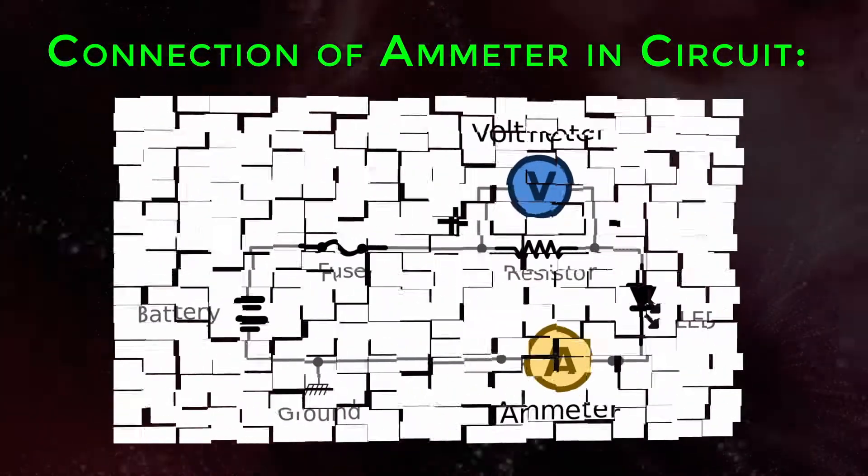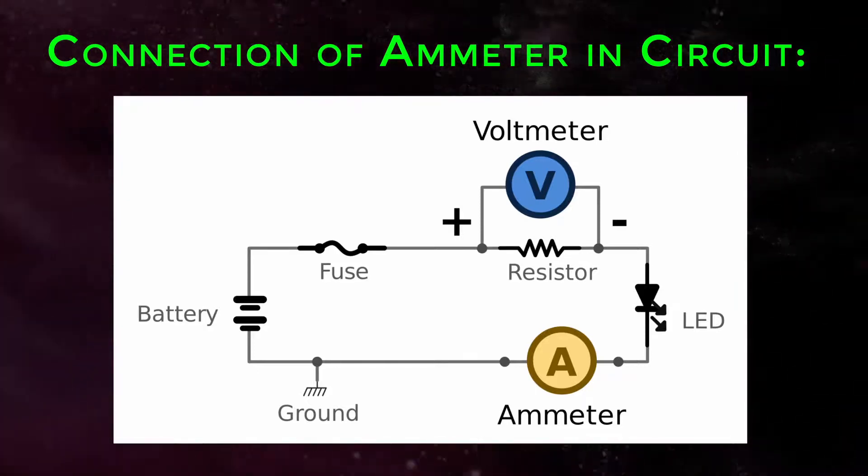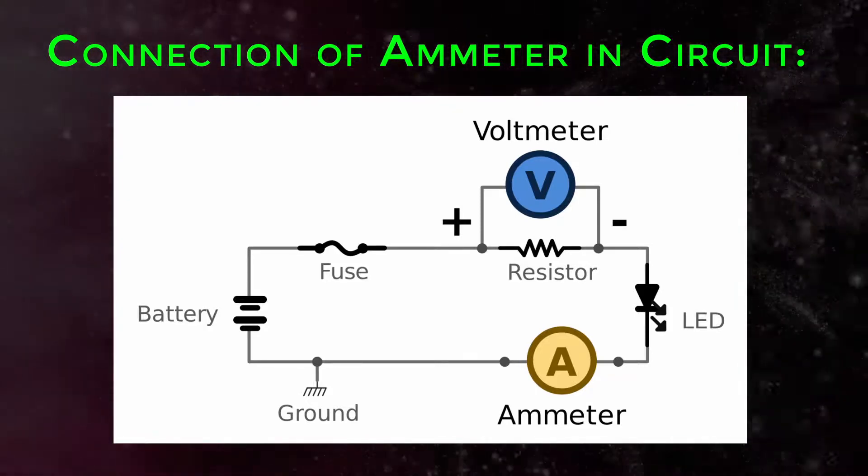Connection of ammeter in circuit: The ammeter is connected in series with the circuit so that the whole electrons of measured current pass through the ammeter.